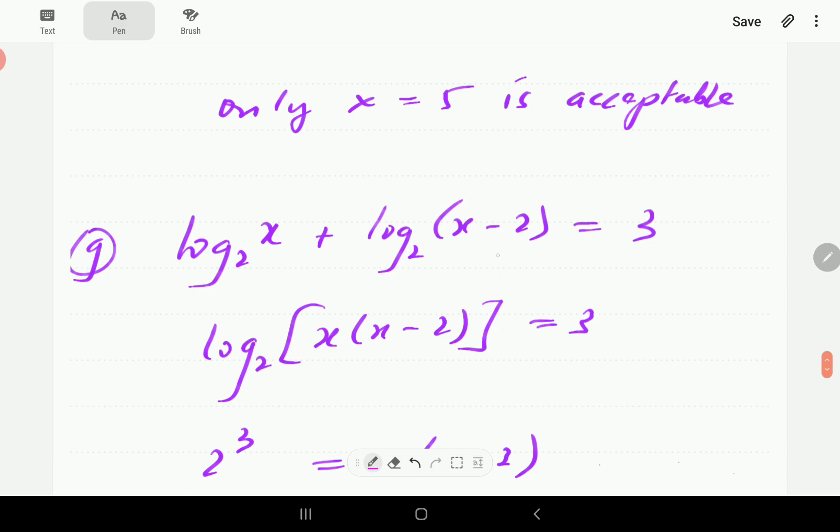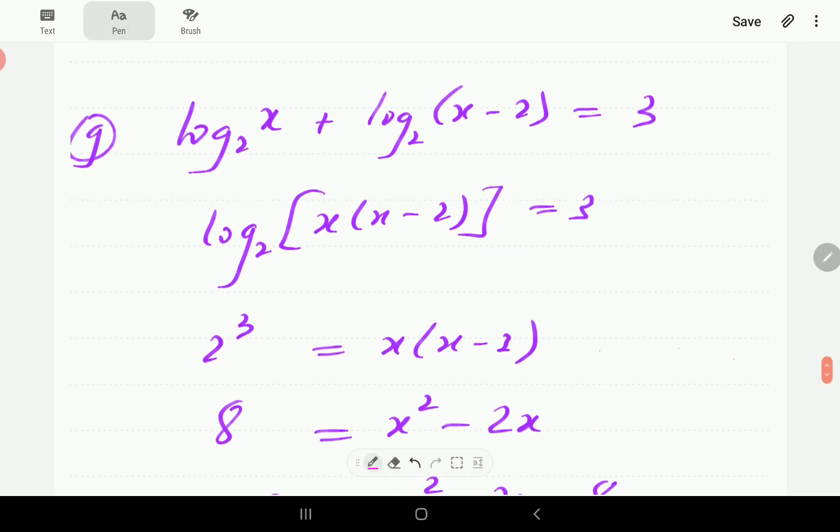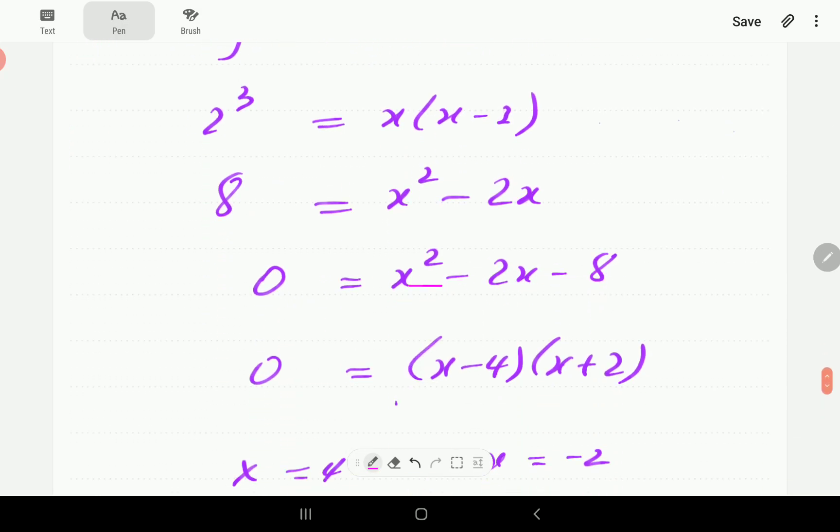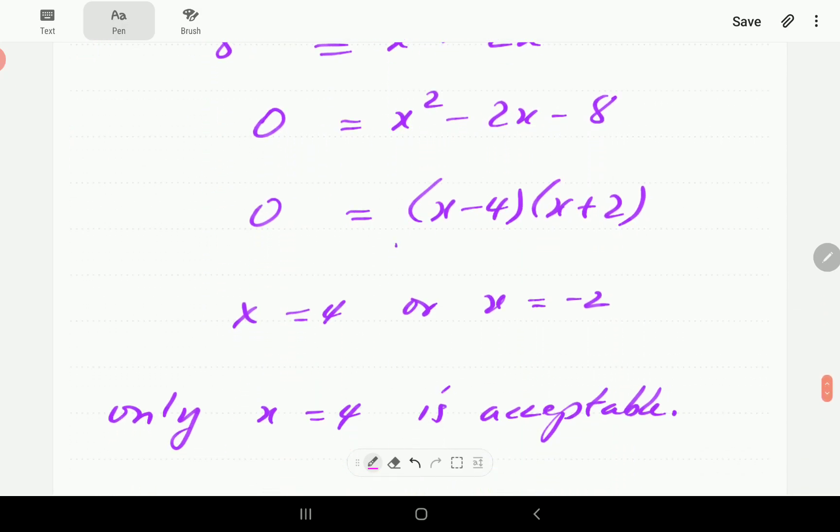Here we've got log base 2. So if we combine them into one term, that's what we have. And so 2 to the power of 3 must be equal to this. Gives us a quadratic, which we solve. And then again, only the positive term is going to be acceptable.